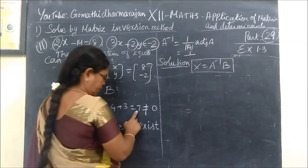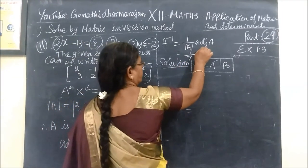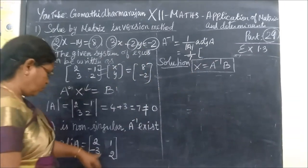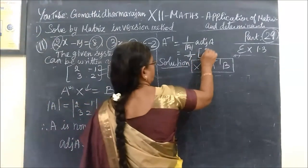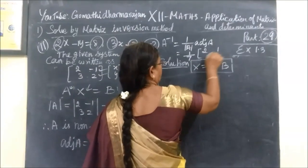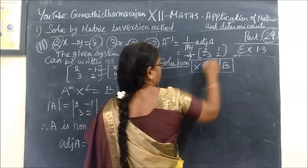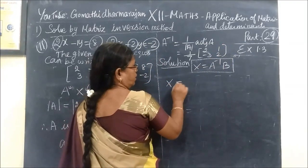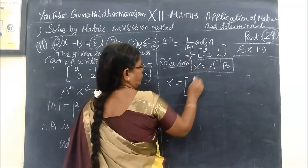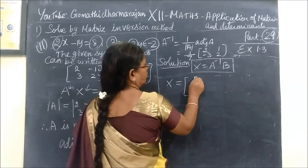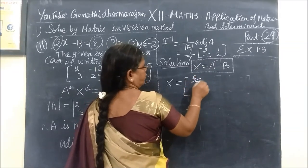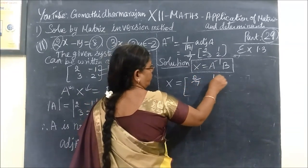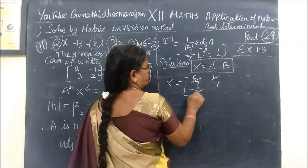This is 2 times, then minus 1, plus 1, plus 3, minus 3. So A inverse equals 1 by determinant A, which is another 7. The order gives: 2, 1, minus 3, 2.